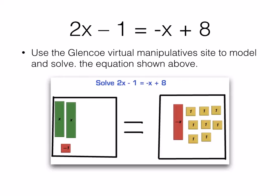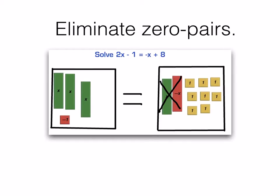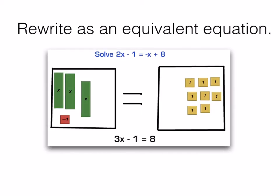Okay, so hopefully you've set up your equation like this. 2x minus 1 equals negative x plus 8. And you added 1x to both sides, thereby eliminating the zero pairs on the right. And you have a new equation. 3x minus 1 equals 8.